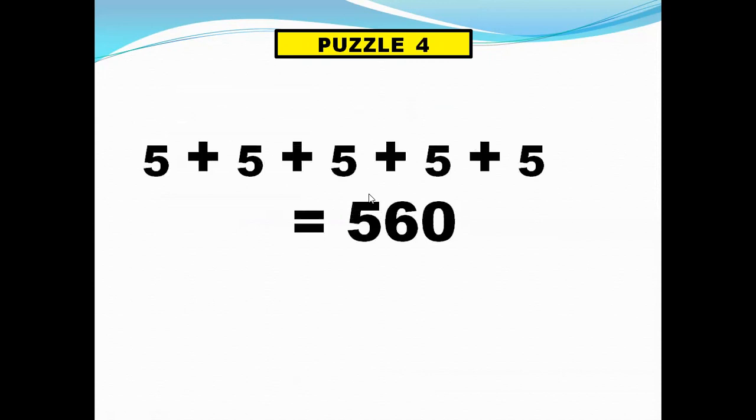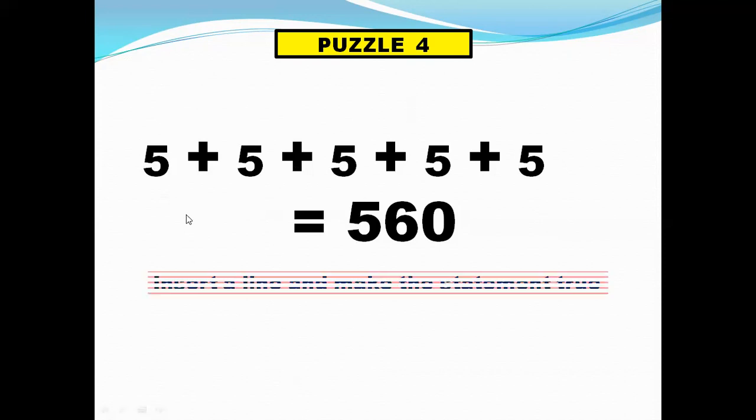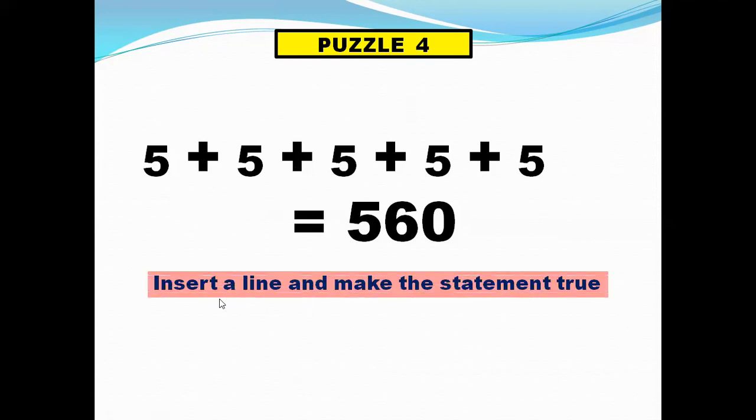Now we come to puzzle 4. What is this? 5 plus 5 plus 5 plus 5 is 560. But we know if we add 5 four times we get 20. So what do we have to do? We have to insert a line and make the statement true. We have to insert only one line.